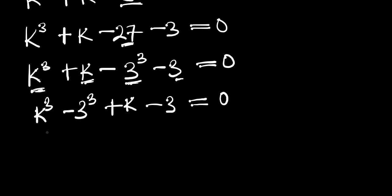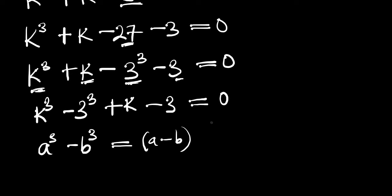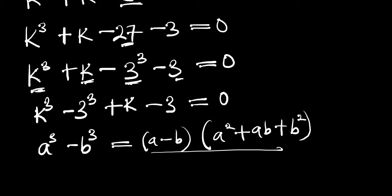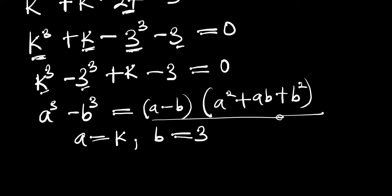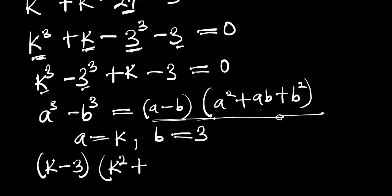We need to employ the difference of cubes identity: a³ minus b³ equals (a minus b)(a² + ab + b²). From our equation, a equals k and b equals 3. Substituting into the identity gives us (k minus 3) into k squared plus k times 3, that is 3k, plus 3 squared.